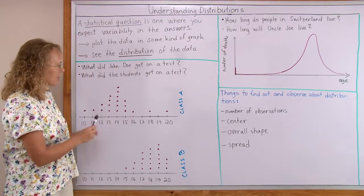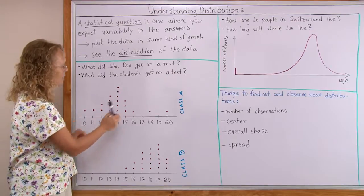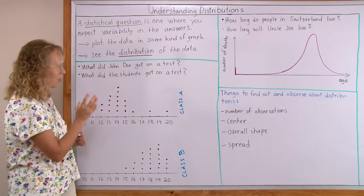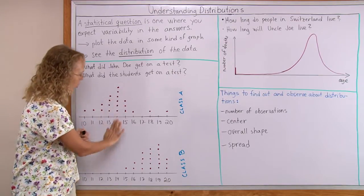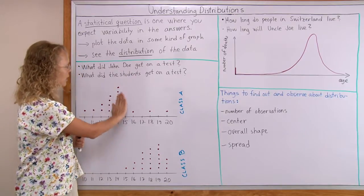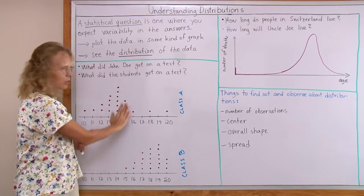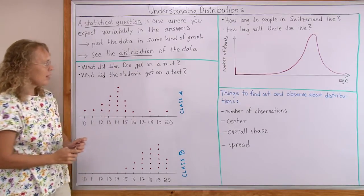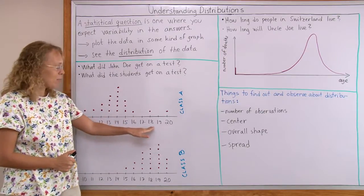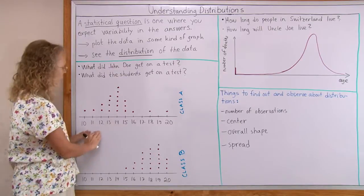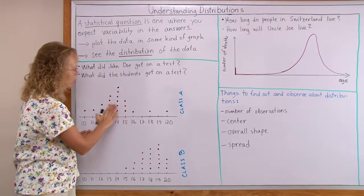In this first class, we can see that the center of the distribution, or the middle point, so to speak, is somewhere here at 14 points approximately. The bulk of the students, the results are here at 13, 14, 15. And then they have one really good student and one pretty good student, and then a few that didn't do very well. But the bulk of the students are here.